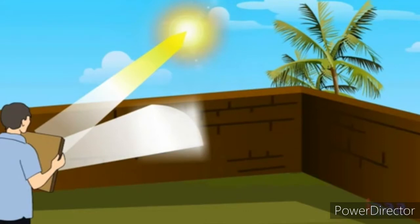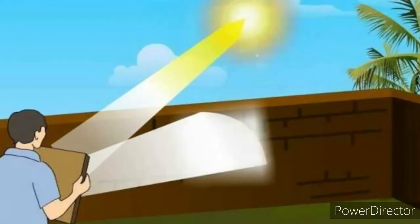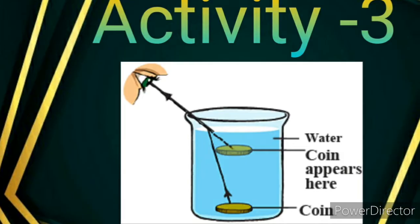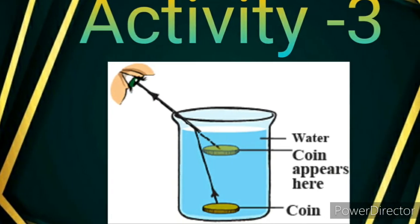You will see a reflected image on the wall even though the wall is not a mirror. Children, do you know why there is an image of the object on the wall? There is an image of the object on the wall due to refraction of light.